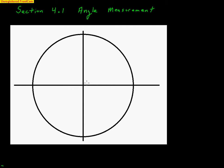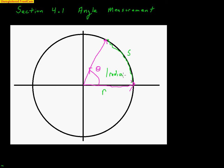I want to quickly draw a picture of what we're talking about with one radian. If we have an angle here with the initial side on the positive x-axis and the terminal side going up here, we'll call this angle theta. One radian is created when the radius and the arc length created by the angle — we call that s — are equal. So when the arc length is equal to the radius, we have one radian.